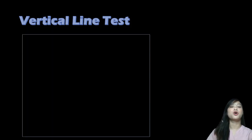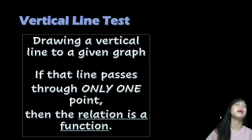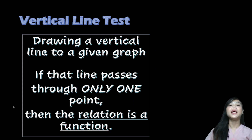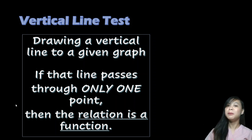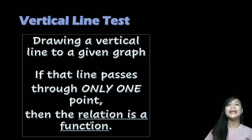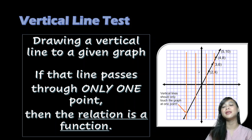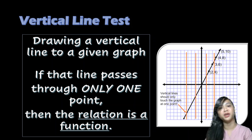Let's define the vertical line test. The vertical line test involves drawing a vertical line on a given graph. If that line passes through only one point on the graph, then that relation is a function. If it passes through more than one point, then it is not a function.